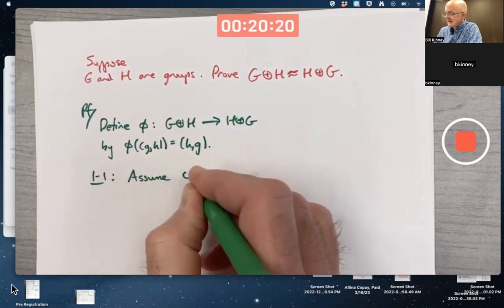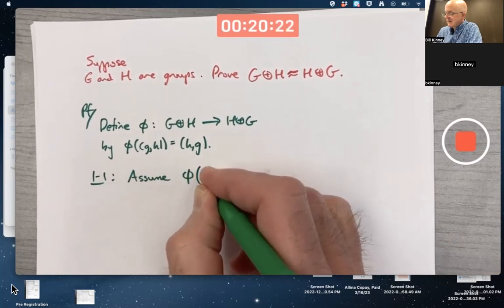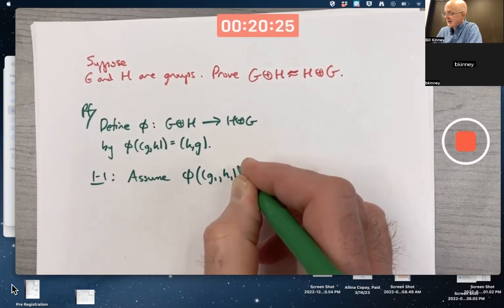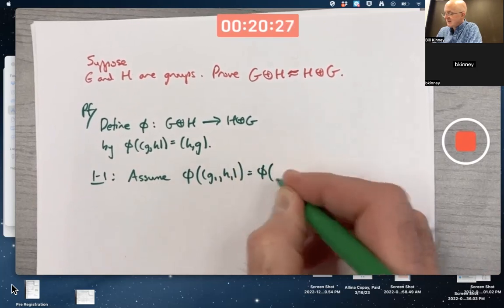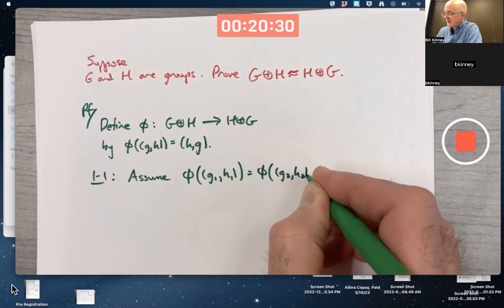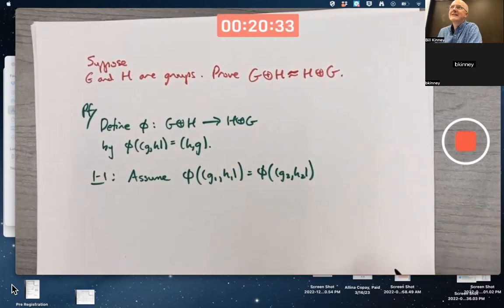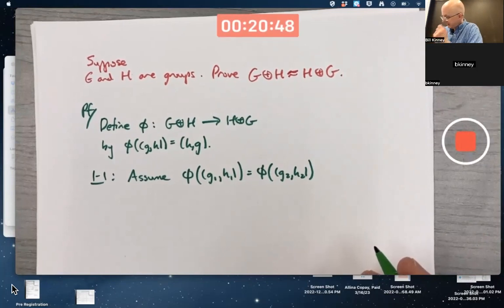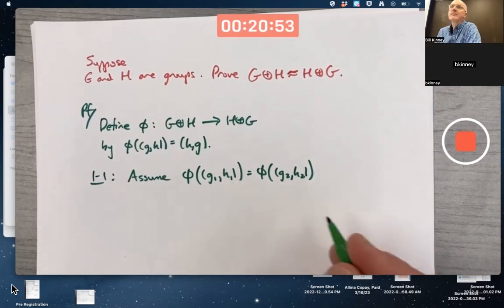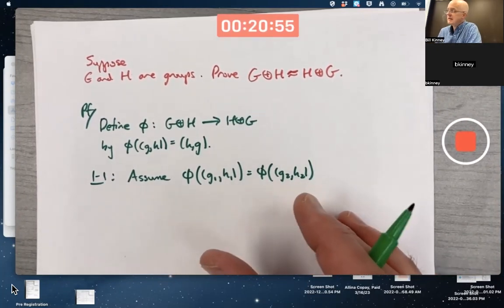Assume phi of (G1, H1) equals phi of (G2, H2). By the way, if you didn't do double parentheses like I'm doing, it's okay. But I am trying to emphasize the outer set of parentheses are for the input for the function phi, and the inner set of parentheses are for the ordered pairs in these external direct products. The goal then would be to show that G1, H1 and G2, H2 are the same, right? If the outputs are the same, the inputs must have been the same.